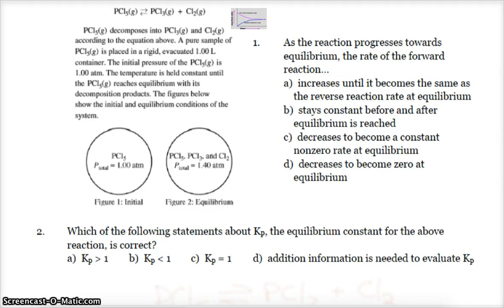We're going to look at a few equilibrium problems here, some multiple choice questions focusing on K, Kp, and Kc. First up, I hope you can read this, but it's our classic decomposition of PCl5 into PCl3 and Cl2, all gases. It says a pure sample of PCl5 is placed in a rigid evacuated 1 liter container.